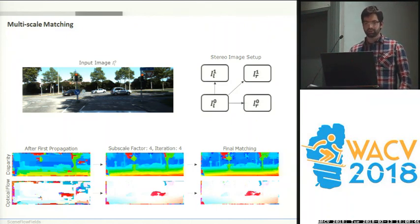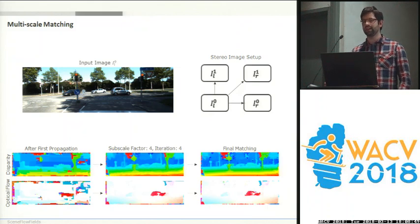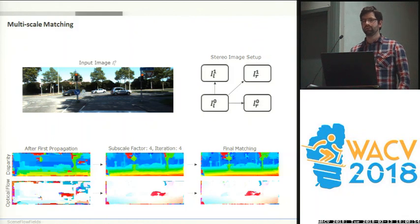Our matching process is a multi-scale approach that is initialized at the lowest resolution, and then uses propagation and random search to spread and refine the initial scene flow vectors until we reach full resolution.